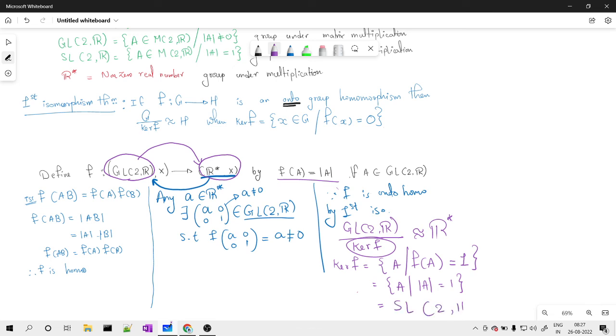And hence ultimately what we conclude from this is my GL(2,R) modulo SL(2,R) is isomorphic to R*. Hence the proof is done.